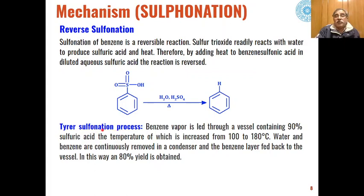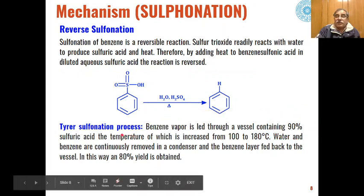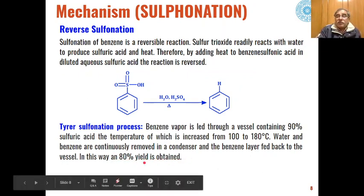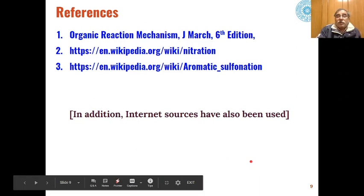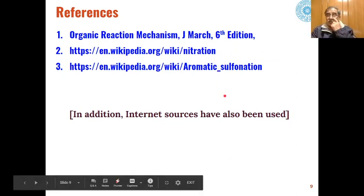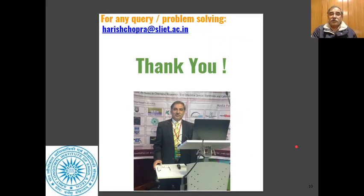Technologically, the sulfonation process used for synthesis of sulfonic acids is called the Tyrer sulfonation process. Here, benzene vapor is used in 90% sulfuric acid and the temperature is raised from 100 to 180 degrees centigrade. Water and unreacted benzene are continuously removed from the reaction mixture in a condenser, and in this way 80% yield of the sulfonation product is obtained. This concludes the general mechanism of nitration and sulfonation. Thank you very much.